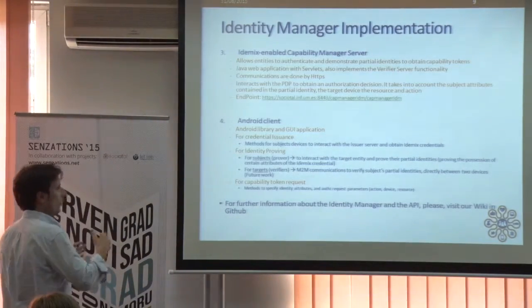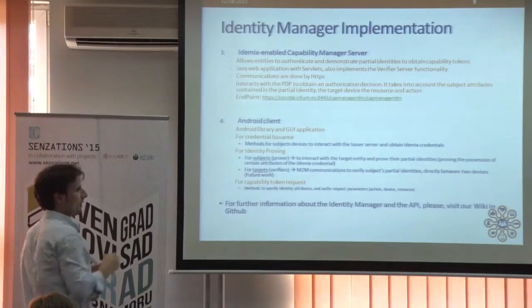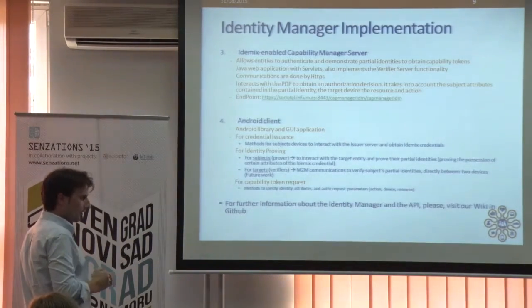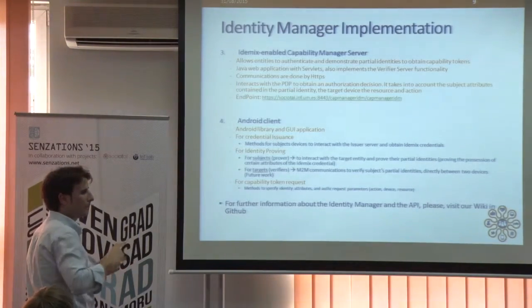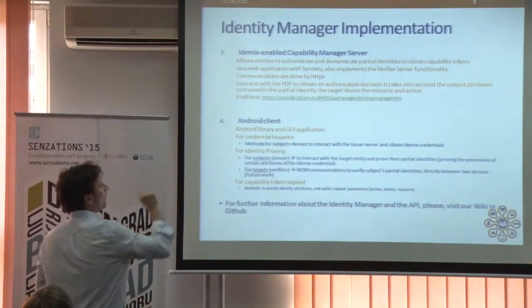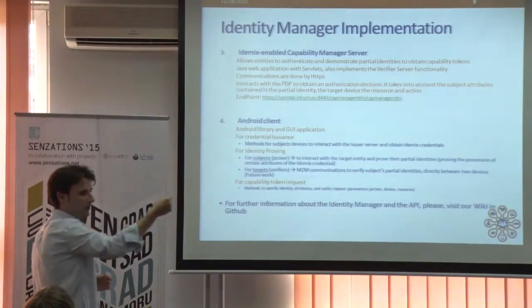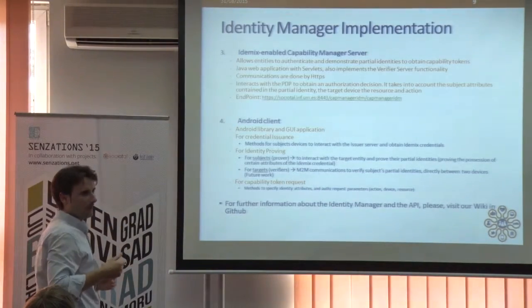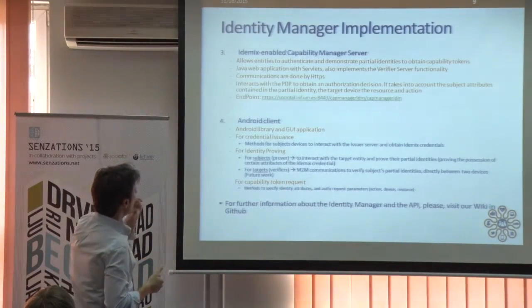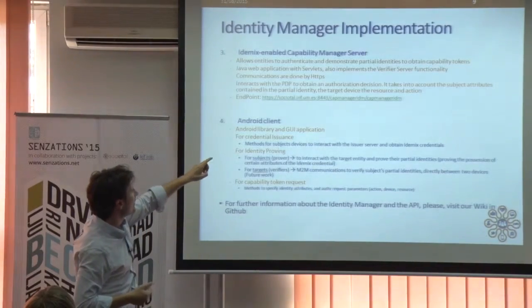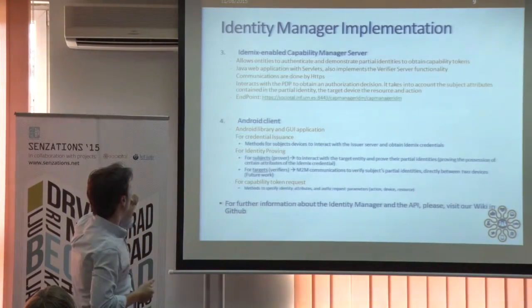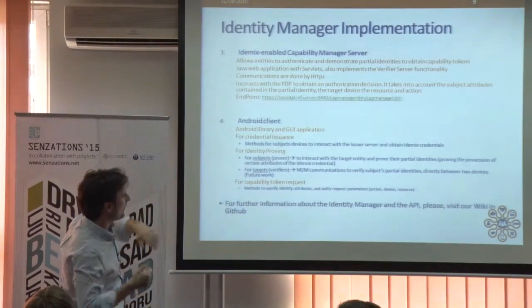The idea is: first obtain the credential, then generate a partial identity from that credential — for example, with only two attributes — and use that partial identity with the capability manager server to obtain the authorization token. That capability manager server is also up and running at our premises.